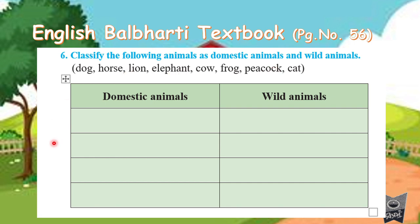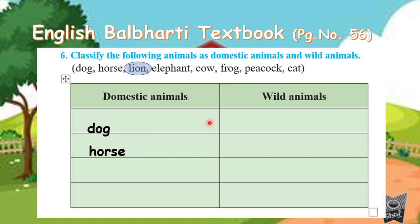We will write it in our textbook itself — no need to write in the notebook. First one is dog — dog is a domestic animal, because we can keep it at home. Write 'dog' under domestic. Next, horse — can we keep it at home? Yes, we can keep a horse at home, so horse is also a domestic animal. Next, lion — can we keep lion at home?